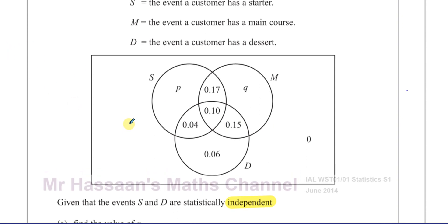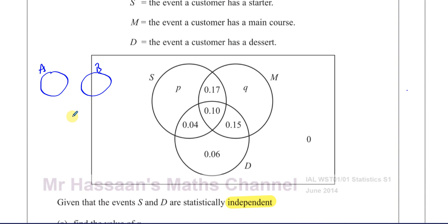Two events are mutually exclusive if they cannot occur at the same time — it's impossible for them both to occur simultaneously, and the Venn diagram would show no intersection between them. For example, from numbers 1 to 10, set A is even numbers and set B is odd numbers. There's no number which is both even and odd, so these are mutually exclusive events.